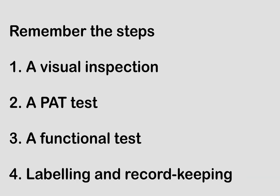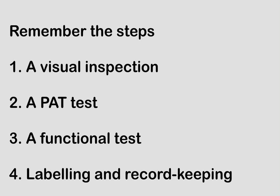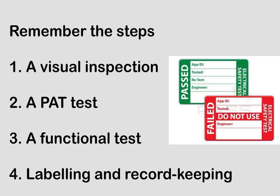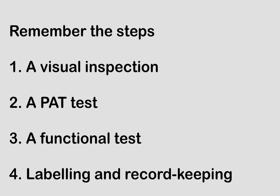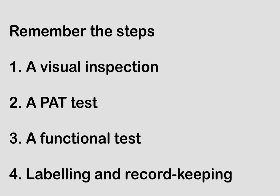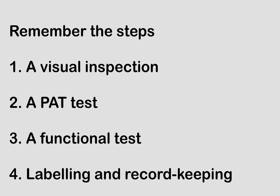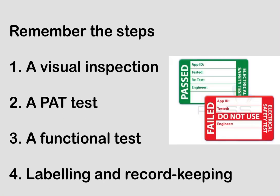Before proceeding to the PAT test you should remember four things. First is visual inspection — it is very important to check your equipment visually. Second is the PAT test itself, for which there are five methods to conduct. Third is a functional test — it is very important to check if your asset or equipment is functioning. Fourth is labeling and record keeping. Once you have done the test, you put a pass or fail sticker on the asset. If it fails, you cannot use it and must keep it out of service.